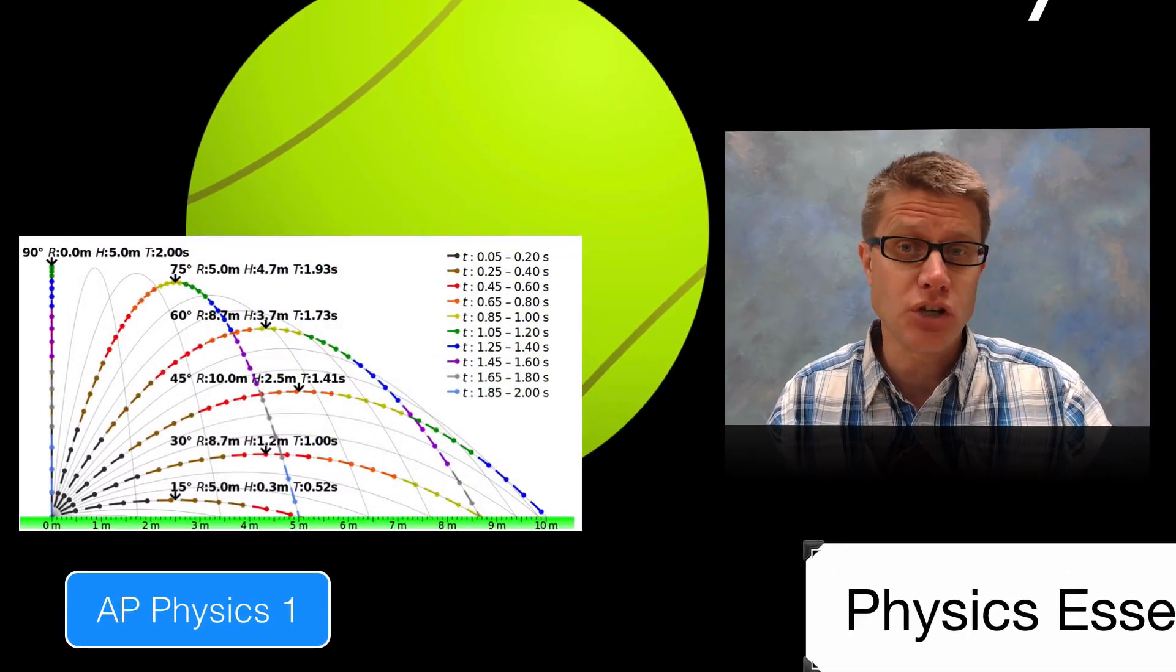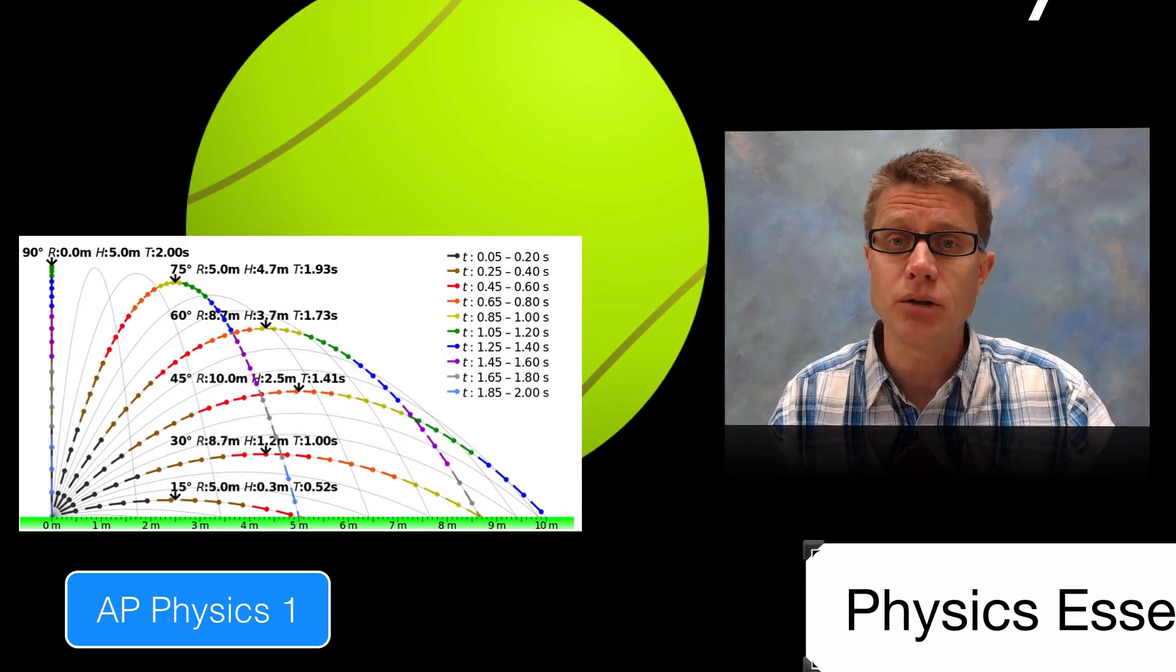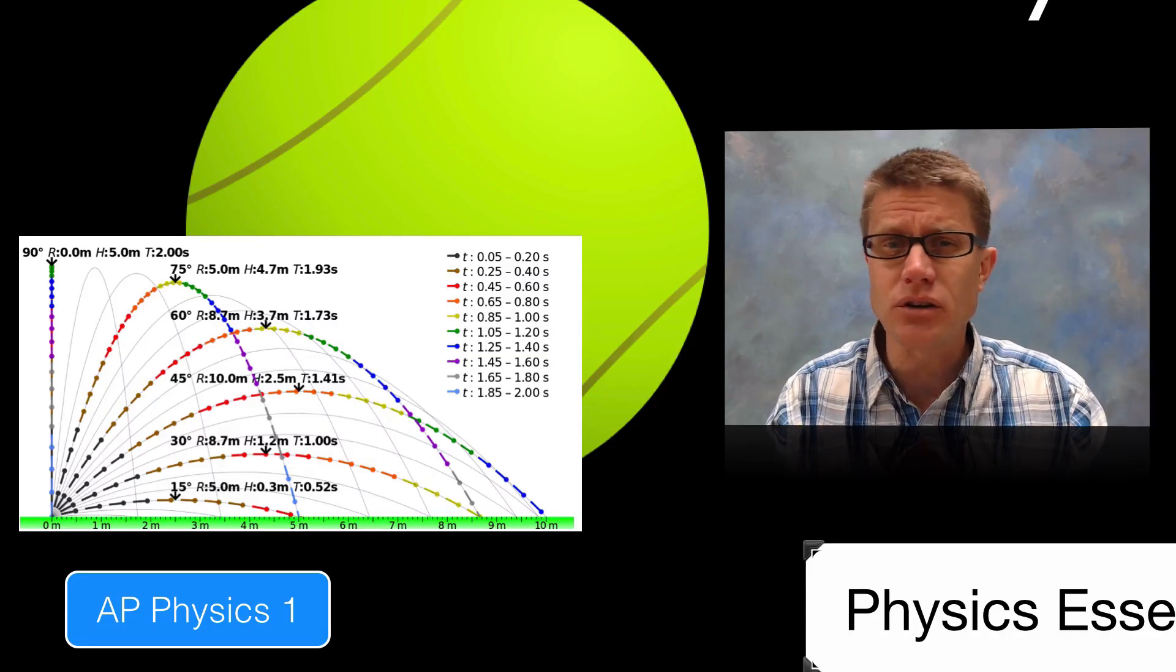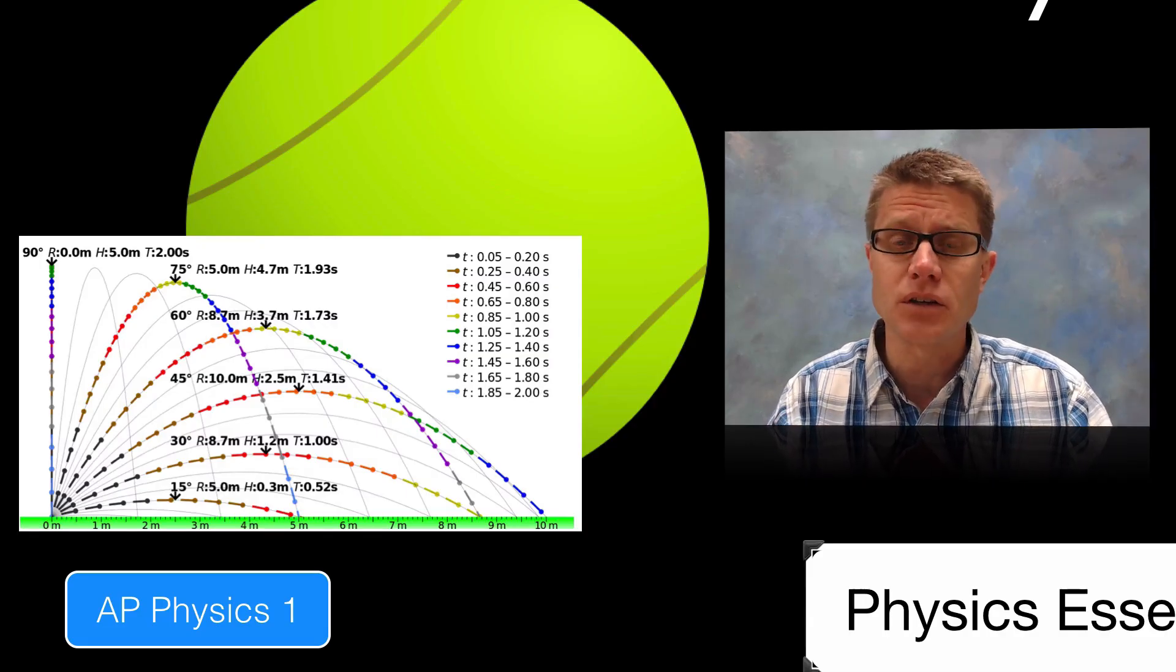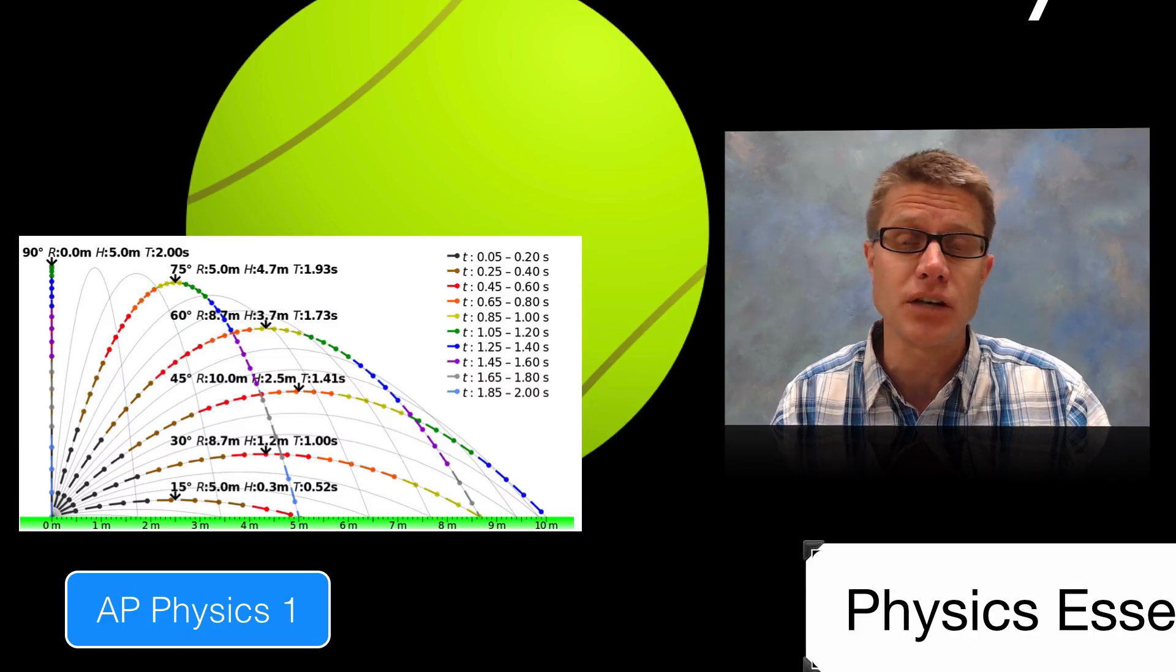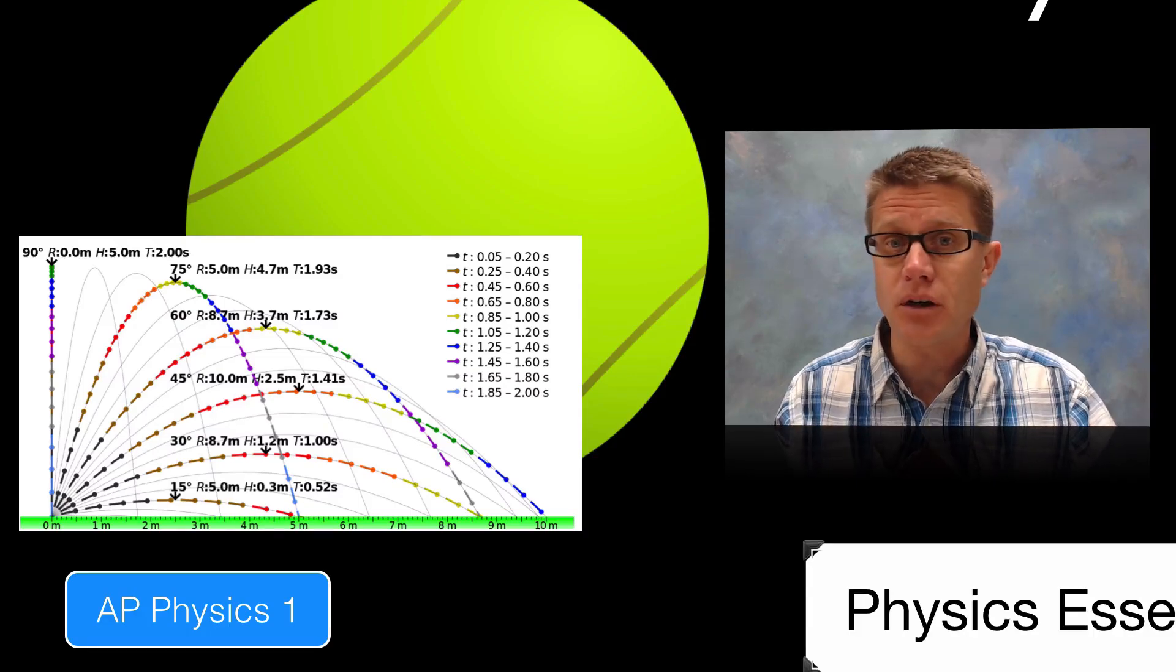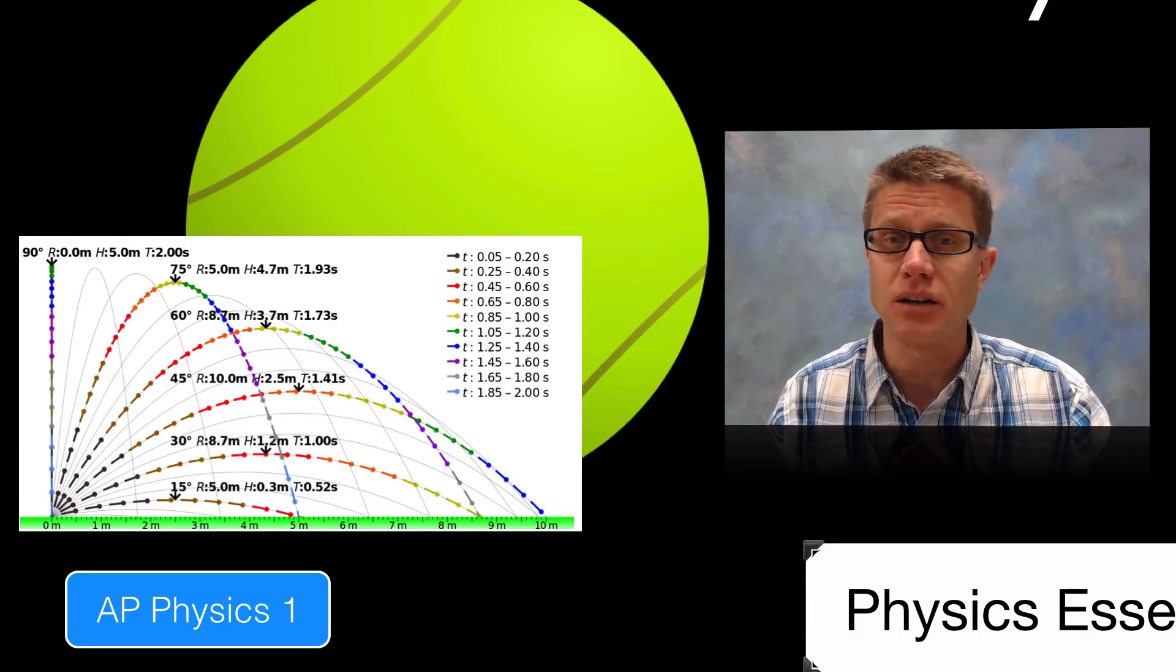So if that tennis ball is a projectile and we are studying projectile motion, the internal structure of the tennis ball is not relevant to the question we are trying to solve. We are just angling the shot of the tennis ball and figuring out how far it goes. And so we can treat the tennis ball as a single object.